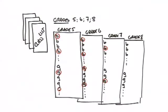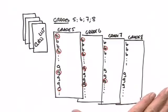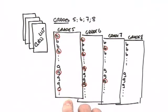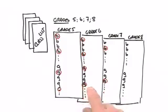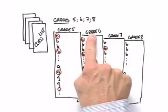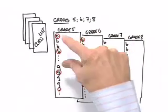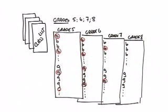What I want you to notice is that the children who have been selected have essentially been selected at random — I didn't know who would be where on the list. But the systematic way in which I've selected the sample has ensured that grade 5s, grade 6s, grade 7s, and grade 8s, as well as boys and girls in each grade, are included in the sample.